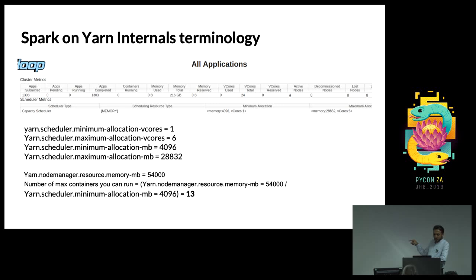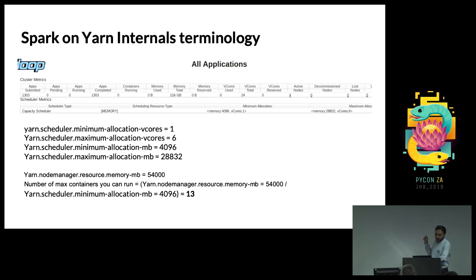The formula for maximum containers is: yarn.nodemanager.resource.memory-mb divided by yarn.scheduler.minimum-allocation-mb. For example, with 54,000 MB total and 4,096 MB minimum allocation, you can run at most 13 containers. This tells you how many Spark jobs can run simultaneously on the cluster.